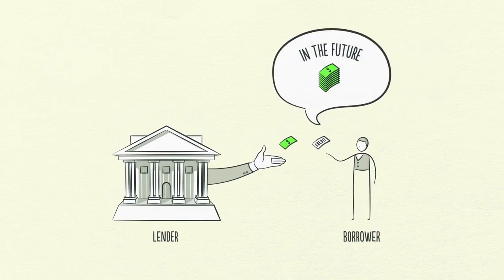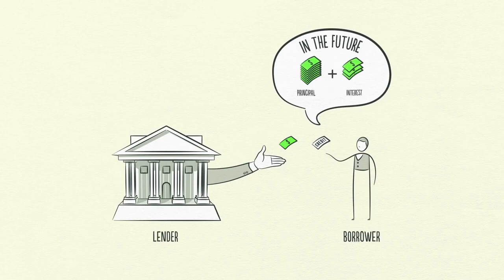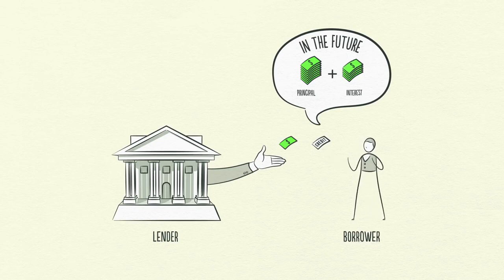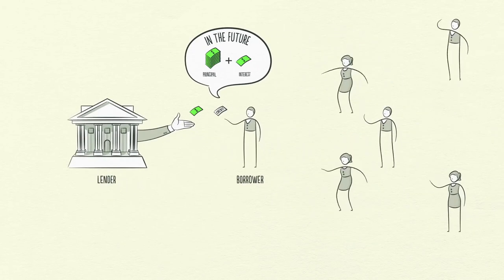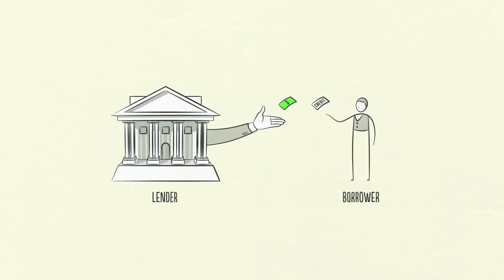Credit can help both lenders and borrowers get what they want. Borrowers promise to repay the amount they borrow, called principal, plus an additional amount called interest. When interest rates are high, there is less borrowing because it's expensive. When interest rates are low, borrowing increases because it's cheaper. When borrowers promise to repay and lenders believe them, credit is created.